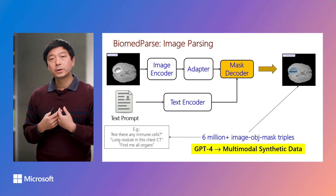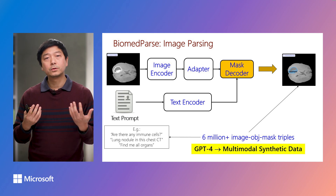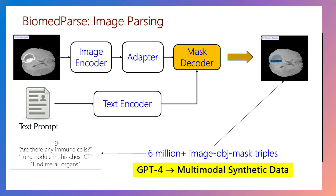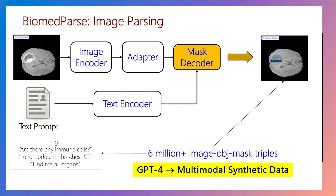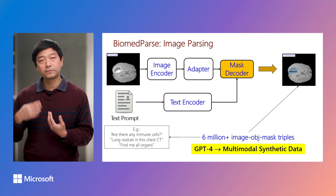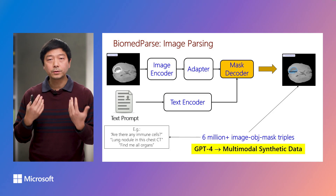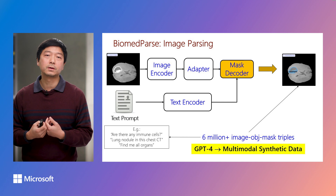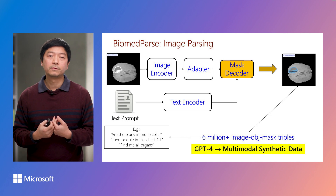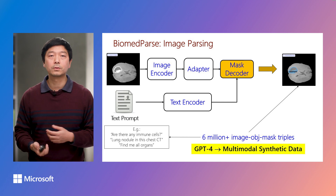Prior biomedical image analysis work tends to focus on segmentation alone, and there is relatively little work for biomedical object recognition and detection, let alone datasets covering all three tasks. For BiomedParse pre-training, we created the first such dataset by harnessing GPT-4 for large-scale data synthesis from 45 existing segmentation datasets.